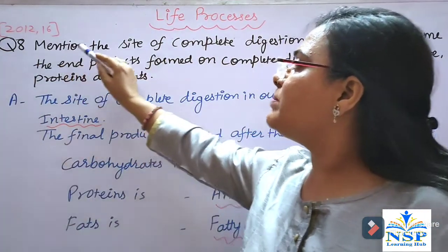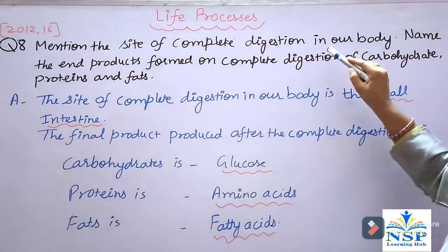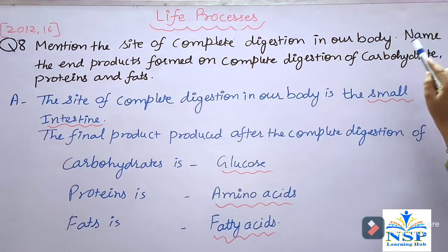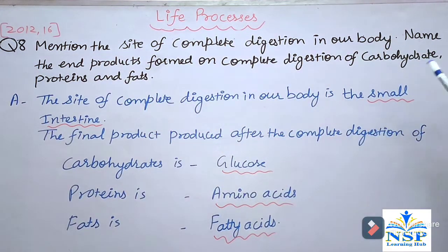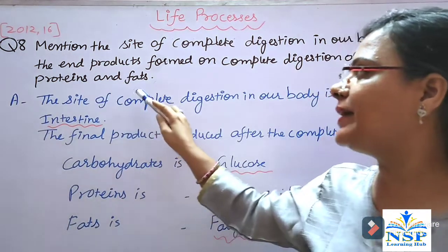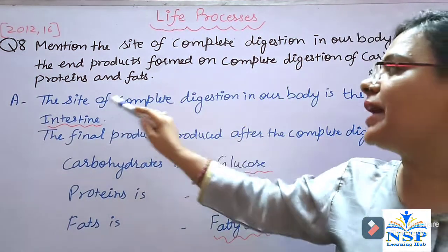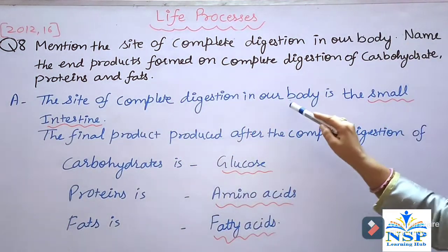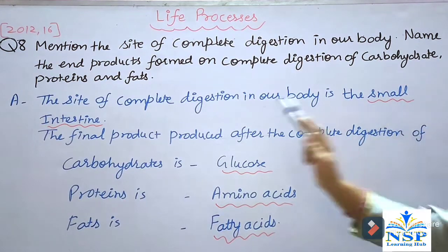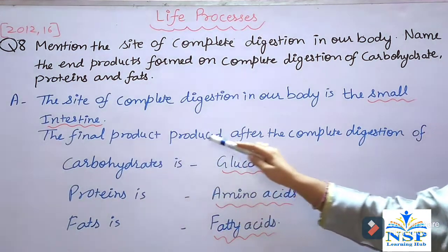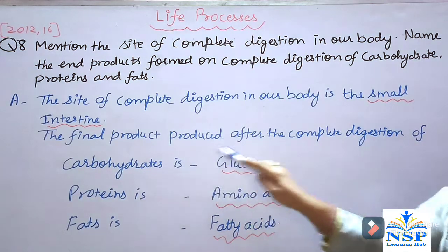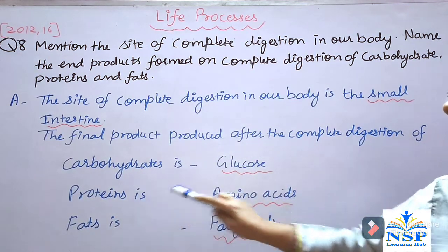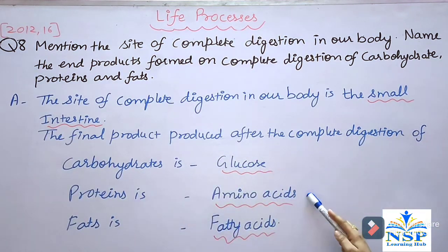Mention the site of complete digestion in our body and name the end products formed on complete digestion of carbohydrates, fats, and proteins. The site of complete digestion in our body is the small intestine. The final product after complete digestion of carbohydrates is glucose, protein yields amino acids, and fat yields fatty acids.